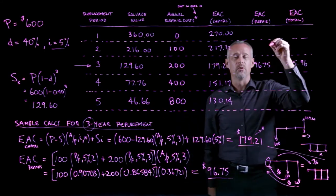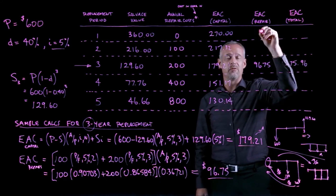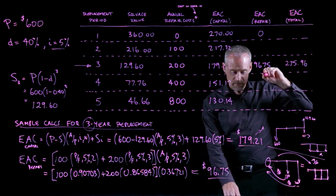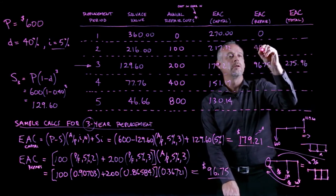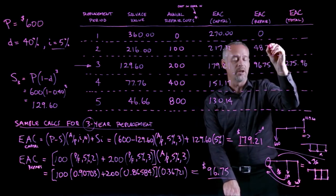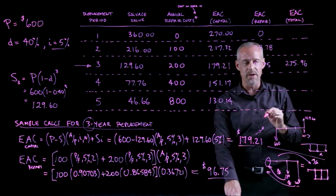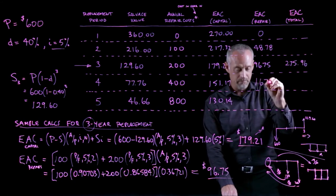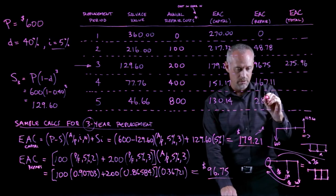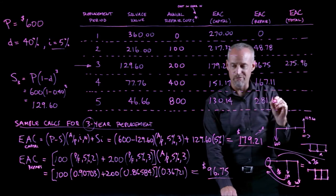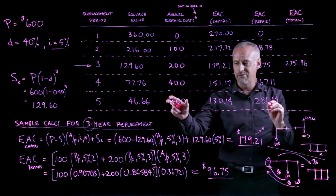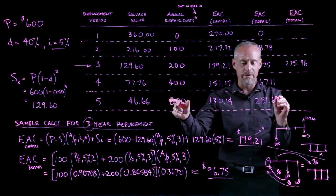In contrast, repair costs can really do anything. If we buy and only own for one year, we'll have no repair costs. If we own for two years, we only have the $100 at the end of year two, which converts to an equivalent annual cost of $48.78 — you can see the effect of the 5% interest. The equivalent annual cost of repairs goes up quite a lot for five years of ownership, heavily affected by the large repair bill in year five, where the lawnmower seems to break down frequently.